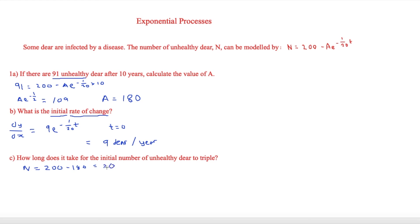The thing we need to work out here is what t is. So then we have 60 equals 200 minus 180e to the minus 1 over 20t.